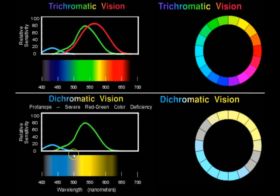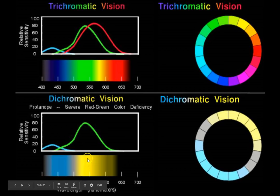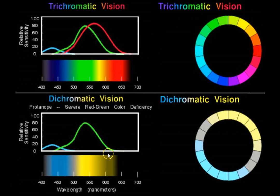Once you get outside of the range of sensitivity of the short wavelength cones, about 500 nanometers, all wavelengths activate just the medium wavelength cones. So how do you know whether you're seeing 550 nanometer wavelength light or 600 nanometer wavelength light? It's nearly impossible to tell. This shows you something like what this individual perceives if they saw a full-spectrum color wheel.